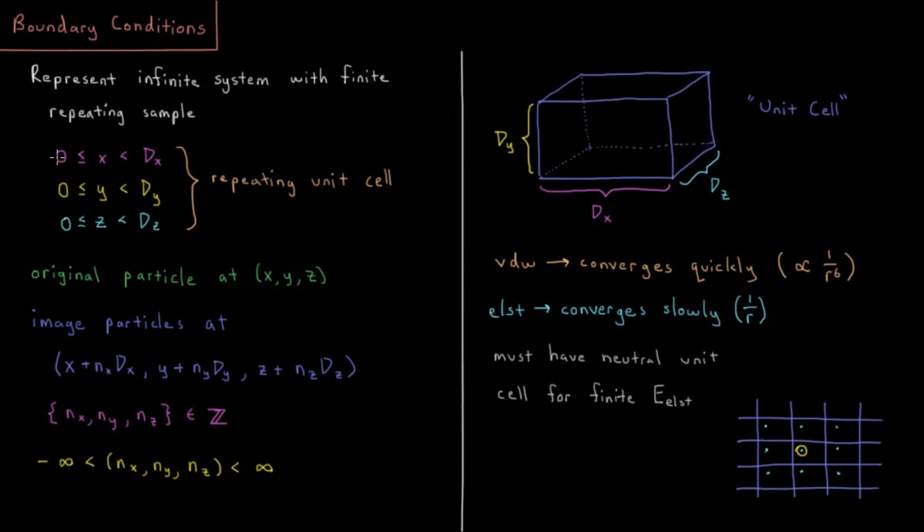So our unit cell, we can imagine like some type of three-dimensional particle in a box model. Where x is between 0 and dx, the size of the box in the x direction. Y is between 0 and dy, size of the box in the y direction. And z is between 0 and dz, size of the box in the z direction.